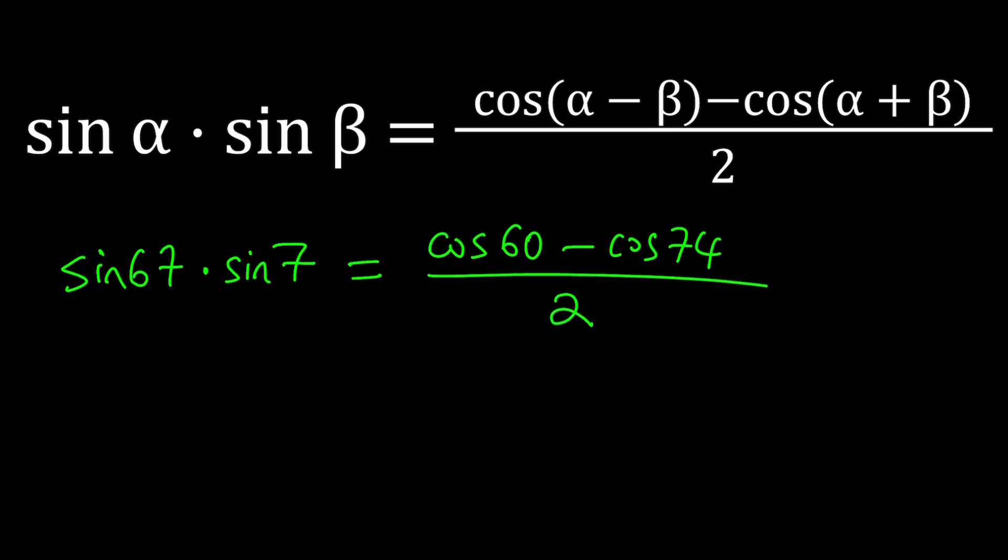Not so nice at the moment, but it's good enough. This is sine 30, which is one half. So we can split it up and write it as one fourth minus half of cosine 74.